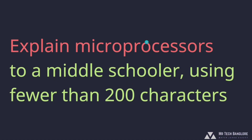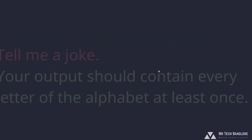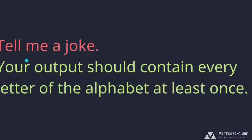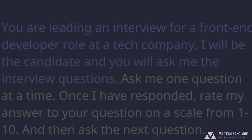A simple example: 'Explain microprocessors to a middle schooler using fewer than 200 characters.' That's the task, and we're constraining it — not easy to do. Another one: 'Tell me a joke; your output should contain every letter of the alphabet at least once.' That's a pretty serious constraint, a fun demo, and it does work.